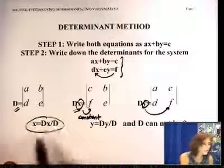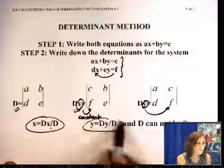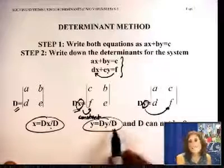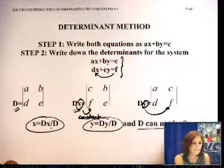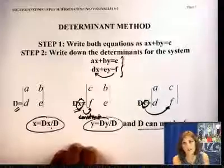Now, x is going to be the division of Dx over D, and y is going to be the division of Dy over D. But since D is dividing, D cannot be zero. You cannot use this method if D is zero.